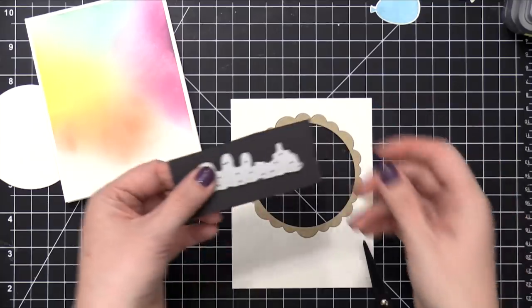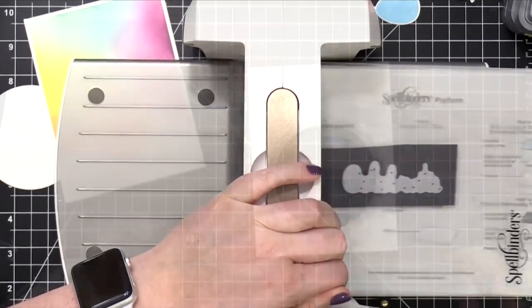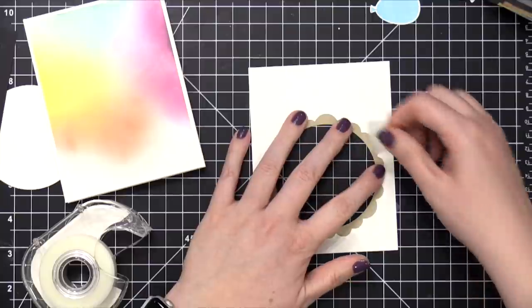Before I do that, while I've got my die cutting machine out, I'm gonna die cut the Celebrate die from Paper Smooches out of some black cardstock. This is some Licorice Twist cardstock from Bazzill.